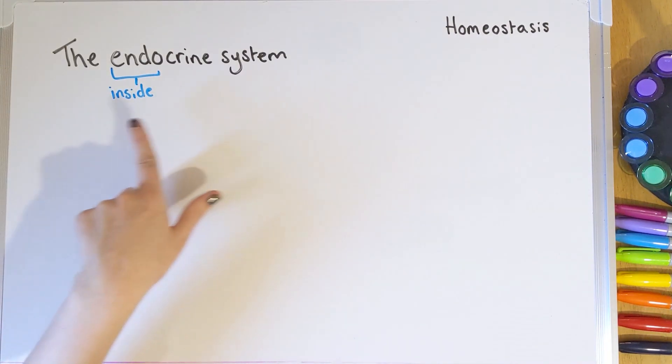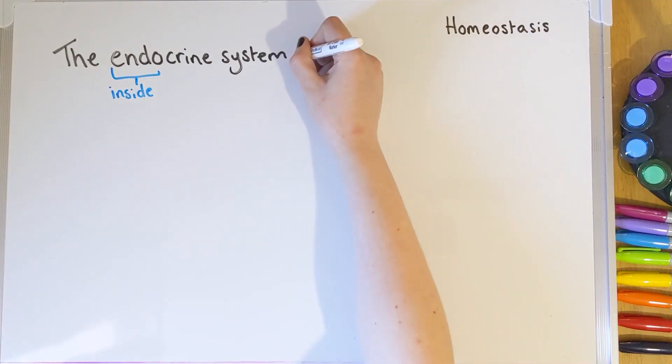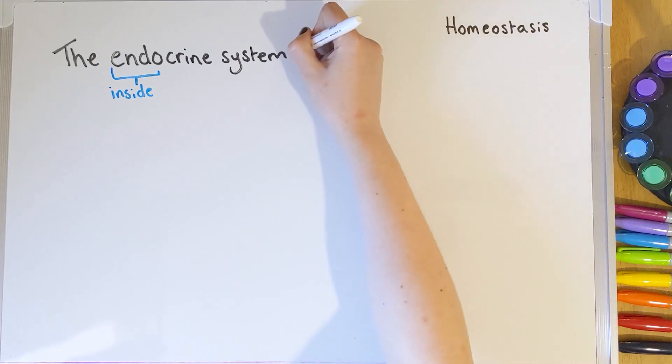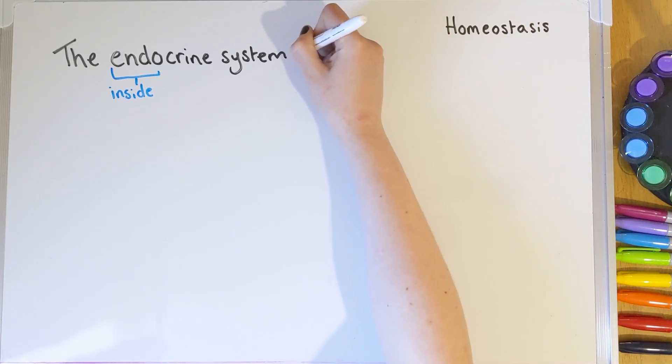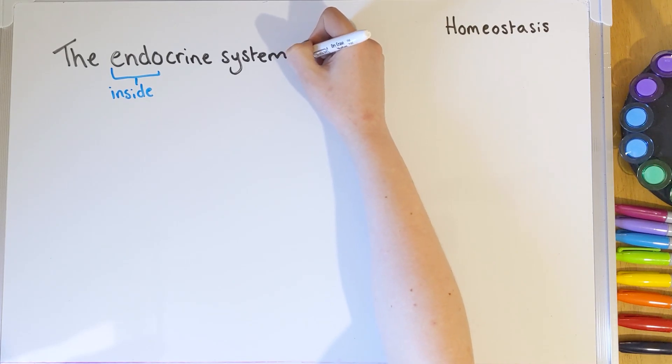So the endocrine system is a system inside our body which releases hormones in order to bring about many changes. When you're sitting around crying at nothing, or you just wake up and you're angry for no reason — because that's what life as a teenager is, or so we are told — it's all down to your endocrine system, which releases hormones and does all sorts of things in your body, both good and bad.